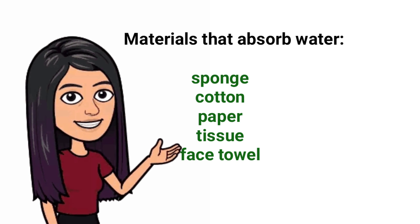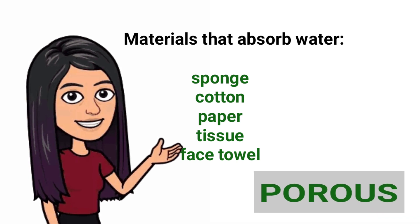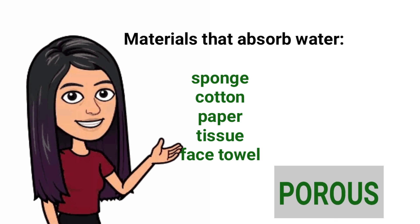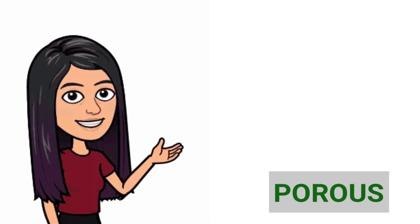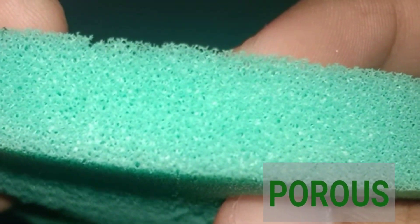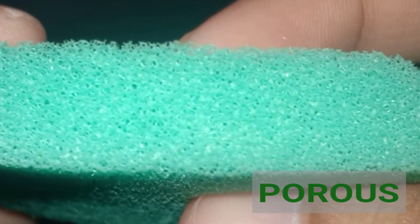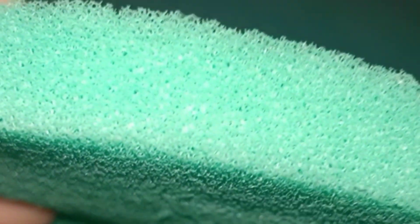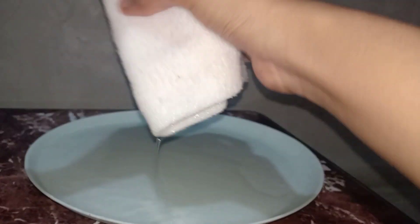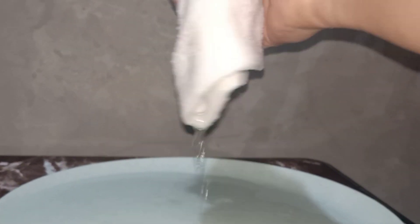Do you know why these materials absorb water? It's because all of them are porous materials. Porous materials are materials with tiny holes in them. Because of these tiny holes, air or liquid could pass through them, allowing them to take in water.